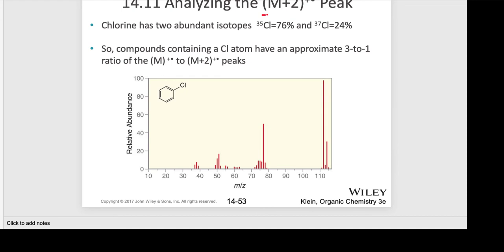It is also possible to see M plus 2 peaks. We can see this with sulfur-containing compounds, but let's focus on the more obvious ones. Chlorine has two abundant isotopes, and the ratio is roughly 3 to 1: chlorine-35 and chlorine-37 — the difference is 2, and that's where the M+2 comes from. Compounds containing a chlorine atom have an approximate 3 to 1 ratio of M to M+2. That's a telltale sign you have a chlorine in there.